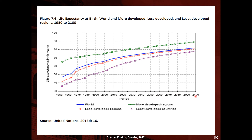Finally, life expectancy at birth has been improving worldwide since 1950 and is projected to keep improving through 2100, based on UN projections. The blue line shows global life expectancy at birth. More developed regions are above the world average, while least developed regions and least developed countries are below it — but all groups show improvement over time, and differentials between groups have been declining.